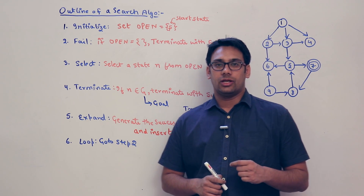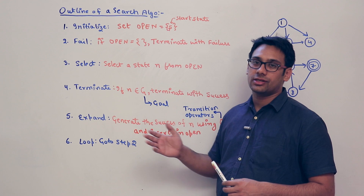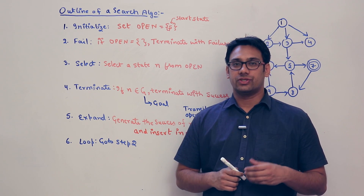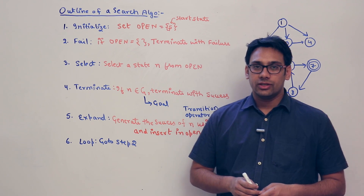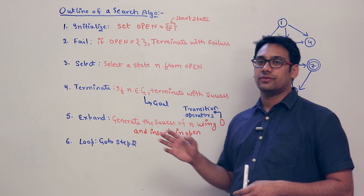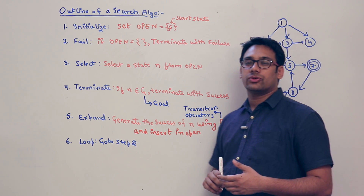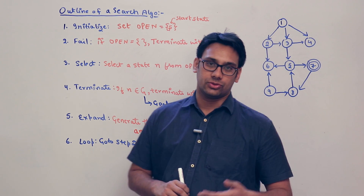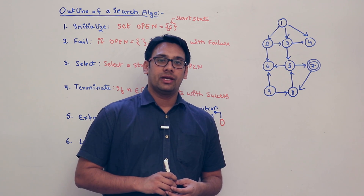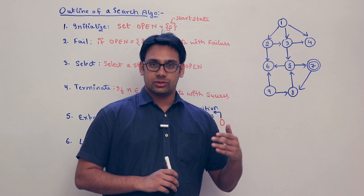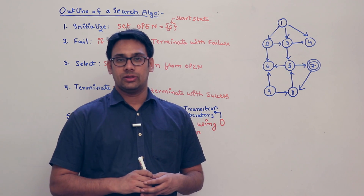Now we have found the state space and we are going to apply the algorithms. This is a general structure of an algorithm which we apply to find the solutions for a given problem. This is a very generalized algorithm — it is an outline. In your examination no one is going to ask you to write the exact algorithm, so you should be able to understand how the algorithm is working and how you can apply it on a given graph or state space.